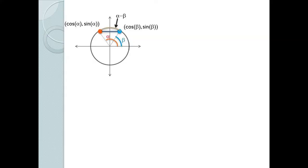We'll start by proving the formula for the cosine of alpha minus beta. We can derive the other three formulas quite easily from this one. Consider an angle alpha which corresponds to the point (cos α, sin α) on the unit circle, and the angle beta which corresponds to (cos β, sin β), and find the length of the chord joining these two points.